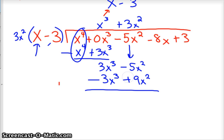Then we do the subtraction. So minus plus, change your signs across. Again, these cross out, because 3x cubed minus 3x cubed is zero. Negative 5 plus 9 is positive 4x squared. Bring down your next term, minus 8x.